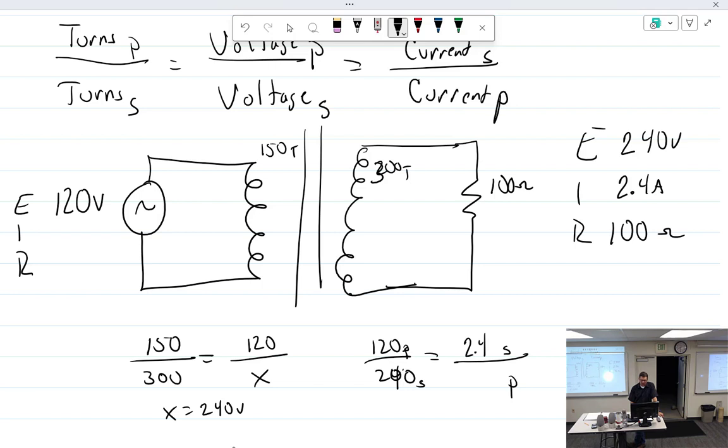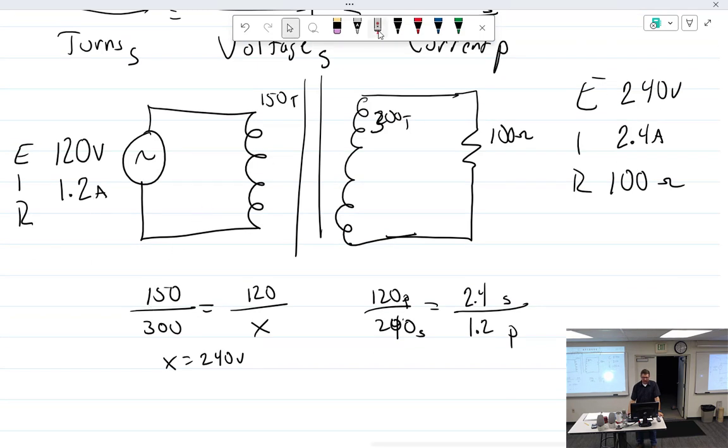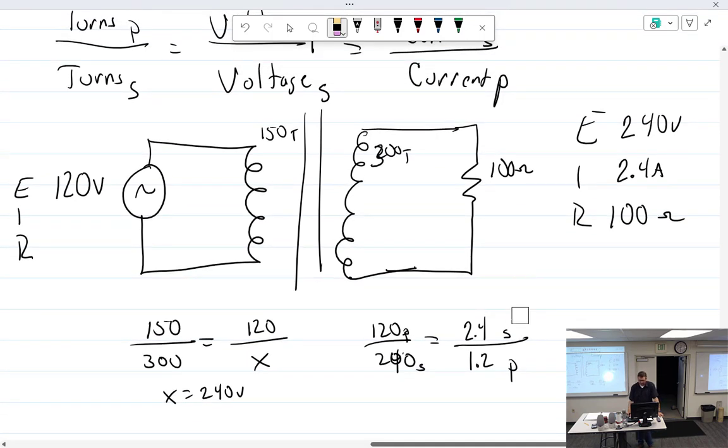So how many amps would be in the primary? 1.2. Wait, wait a minute. Back up. Wouldn't the amperage be bigger on the primary? Where did we go wrong? 120 in the primary, 240 in the secondary, 2.4 in the secondary. That'd be like 4.8. Yeah. Who told me 1.2?